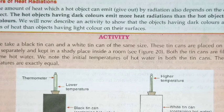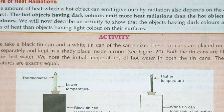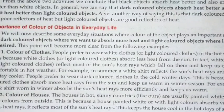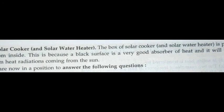A dark-colored object absorbs heat quickly and also releases it quickly compared to a light-colored object. This is why wearing a black shirt in summer makes you feel hotter. In summer, we wear light-colored clothes, and in winter we wear dark-colored clothes. Houses in hotter places are painted white or light colors, while houses in colder places are painted dark or black to maintain a lower temperature. Solar cookers and solar water heaters have boxes painted black so they can absorb maximum heat radiation from the sun.